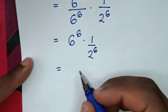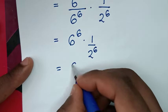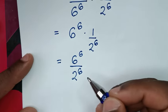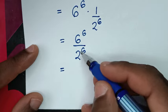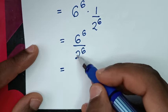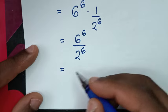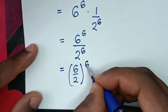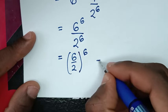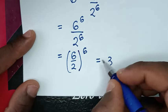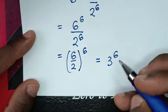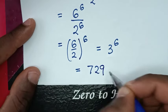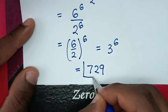This gives us 6 power of 6 over 2 power of 6. This is division of exponents with different bases but the same power of 6, so we write (6 over 2) to the power of 6. Then 6 divided by 2 is 3, so we get 3 power of 6, which equals 729. Therefore, 729 is our final answer.